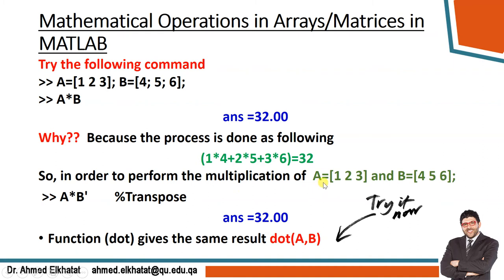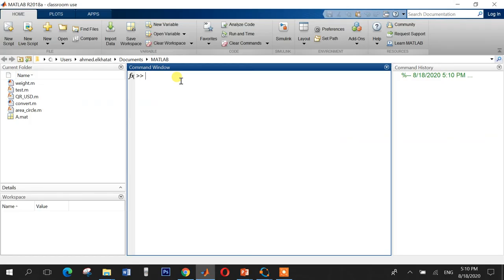We can also transpose a matrix. So apostrophe A times apostrophe B will give me also 32. Also, the function dot can give the same result. So dot(A, B) will give the same results.